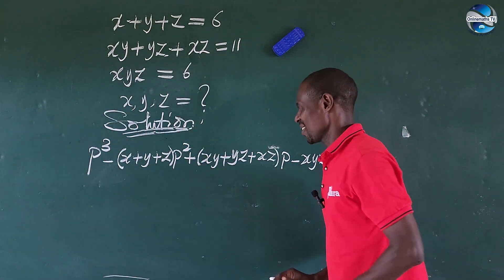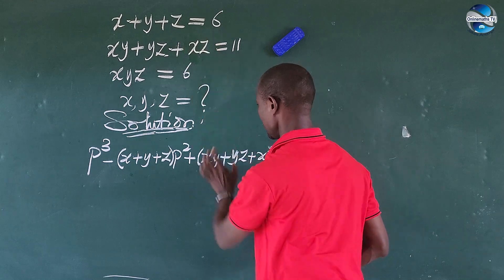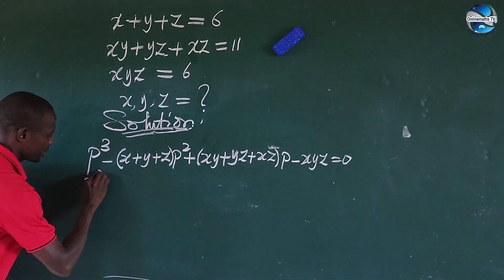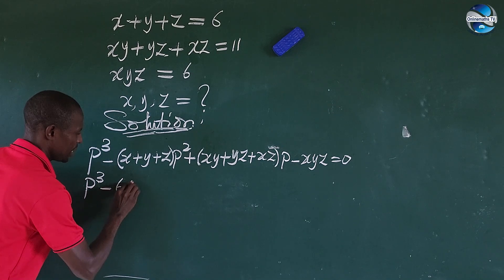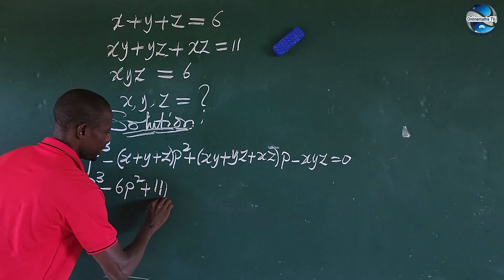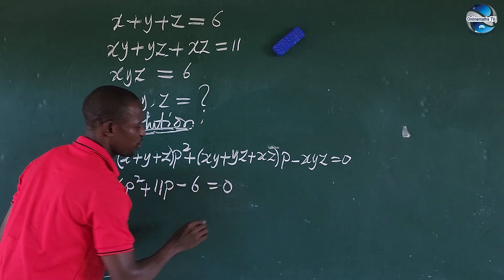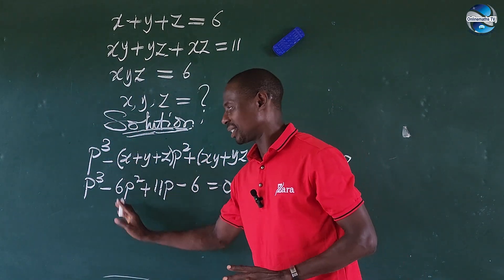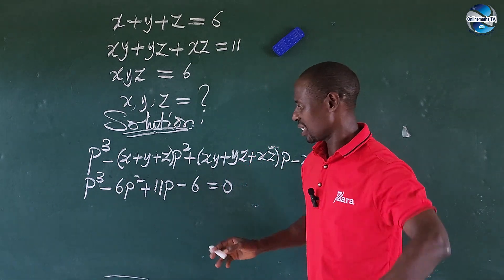We can go ahead and do our substitution. The value of x plus y plus z is 6, xy plus yz plus xz is 11, and xyz is 6. Substituting gives us P cubed minus 6P squared plus 11P minus 6, all equal to 0. We now have a polynomial of third order degree.